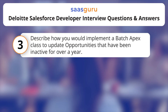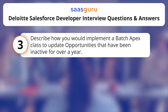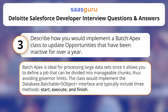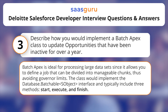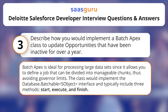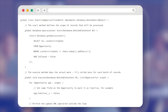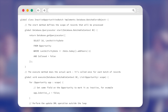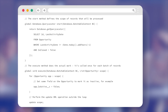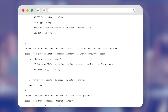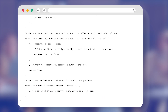Describe how you would implement a Batch APEX class to update opportunities that have been inactive for over a year. Batch APEX is ideal for processing large data sets since it allows you to define a job that can be divided into manageable chunks, thus avoiding governor limits. The class would implement the database.batchable SObject interface and typically include three methods: Start, Execute, and Finish. Here's a simple structure of what that class might look like. To execute this Batch class, you would initiate it in APEX using the database.executeBatch method, specifying the batch size according to your needs.